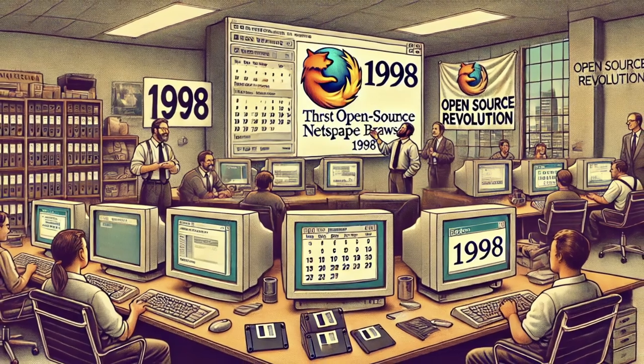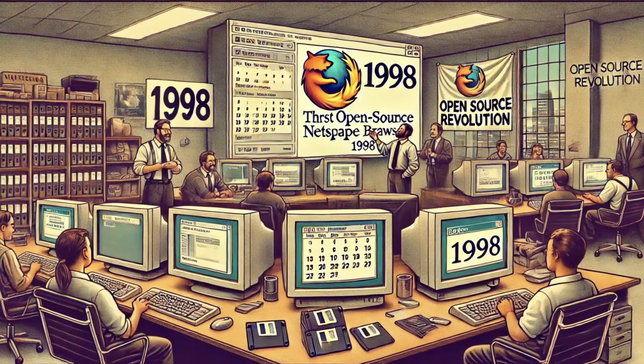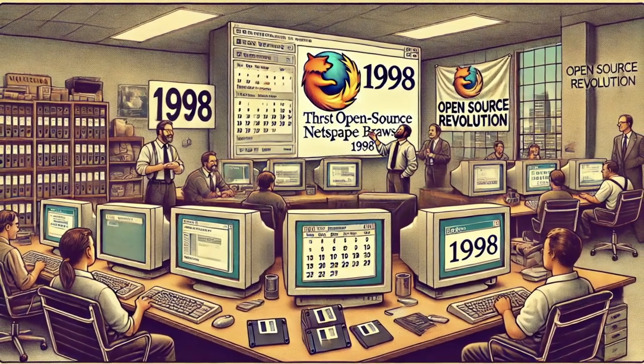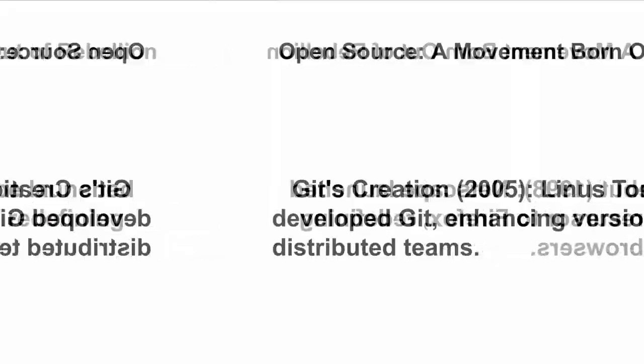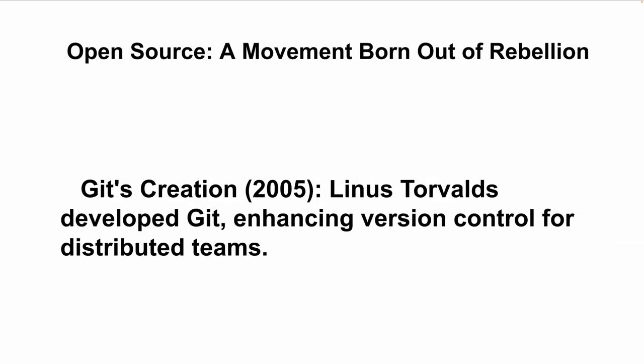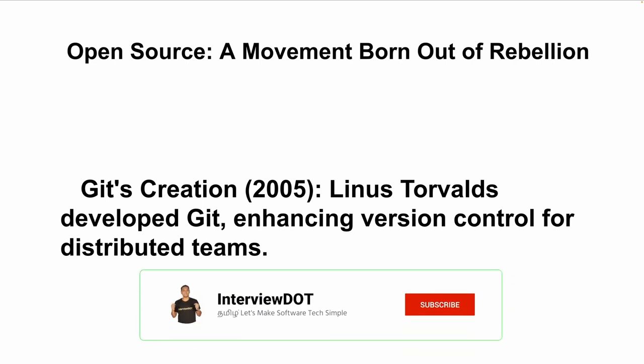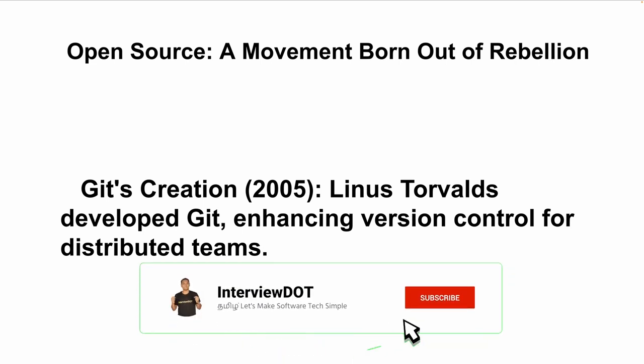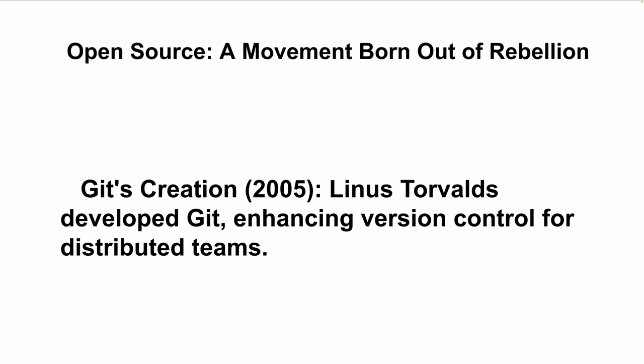In 2005, the Git project was introduced. It is used as a code storage repository, for version control, creating branches, and supporting distributed teams.